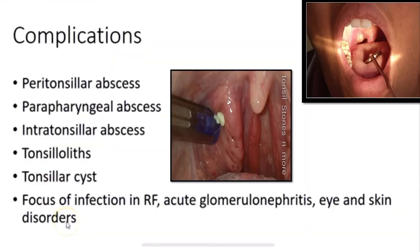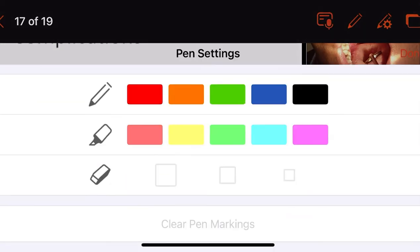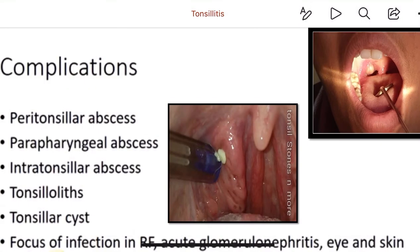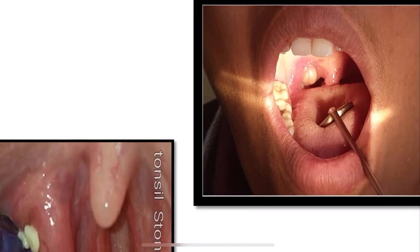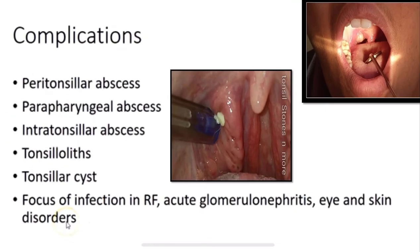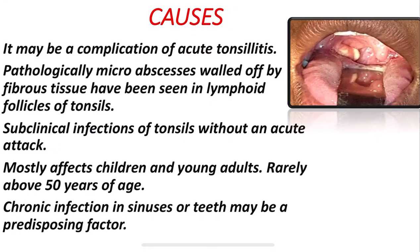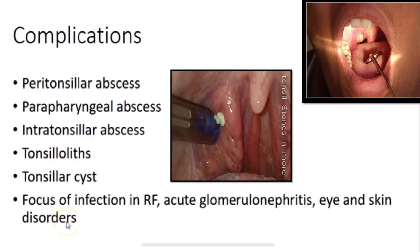Complications of chronic tonsillitis include peritonsillar abscess, parapharyngeal abscess, intratonsillar abscess, tonsilloliths (tonsillar calculi — stones), and tonsillar cysts. You can identify the cysts and calculi in the pictures shown.